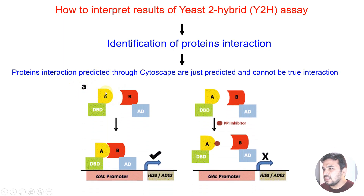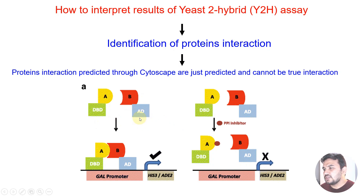Here you can see we have two proteins: protein A and protein B. We use a binding domain vector and an activation domain vector. The binding domain vector is the bait and the activation domain vector is the prey. If A and B interact, they will express the GAL promoter and form a blue color or a colony.